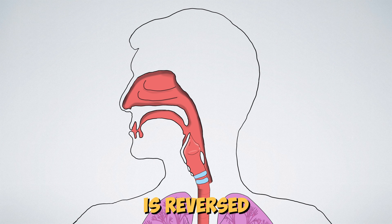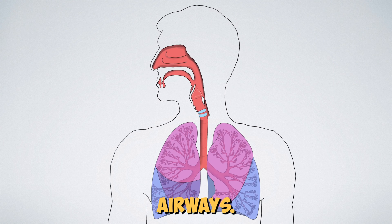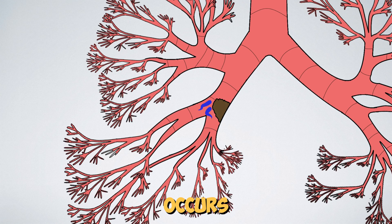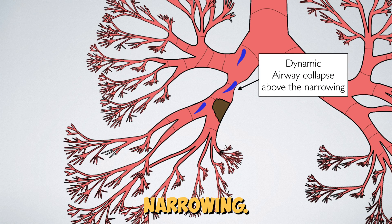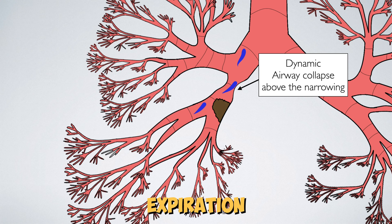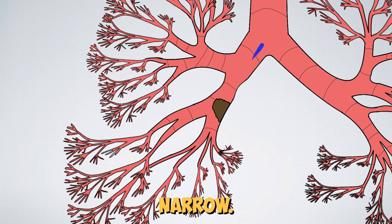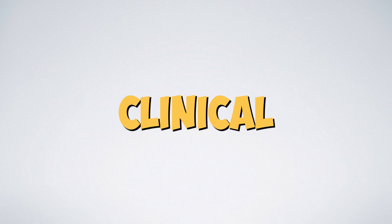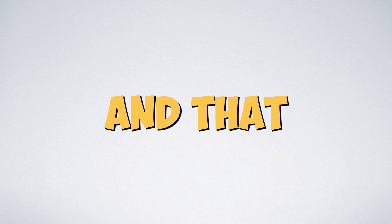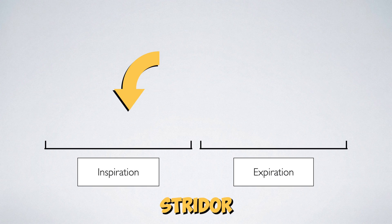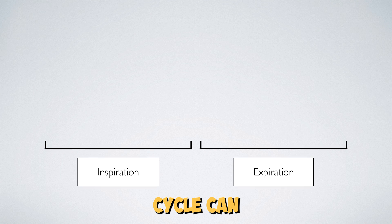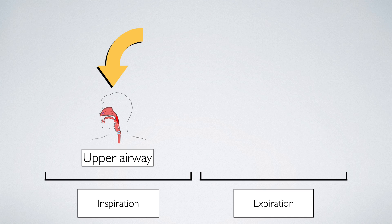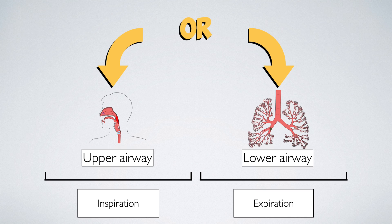The Bernoulli principle is reversed in the lower airways. This means that collapse occurs higher up above the narrowing. Collapse does not occur during inspiration, but is seen in expiration as the airways naturally become more narrow. These dynamic changes in the airway lead to a very useful clinical sign: the timing of the stridor in the respiratory cycle can give an indication as to the location of the airway narrowing.